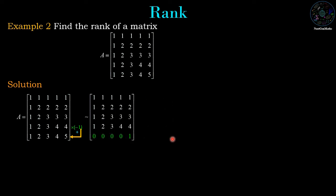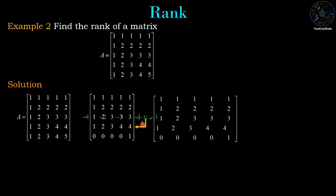In the next operation we multiply row 3 by minus 1 and add it to row 4. Row 3 multiplied by -1 gives -1, -2, -3, -3, -3. Adding to row 4: 1-1=0, 2-2=0, 3-3=0, 4-3=1, 4-3=1. So the new row 4 is 0, 0, 0, 1, 1.